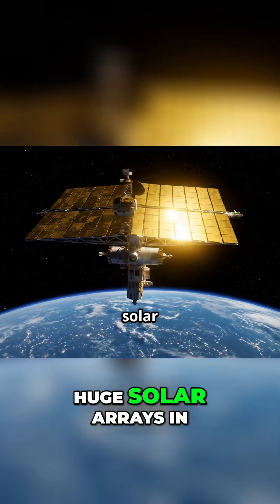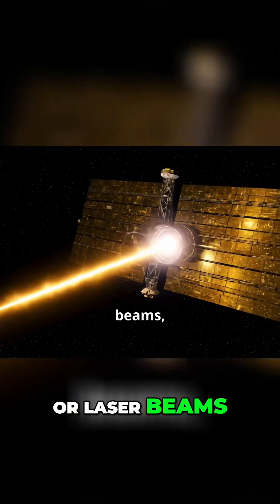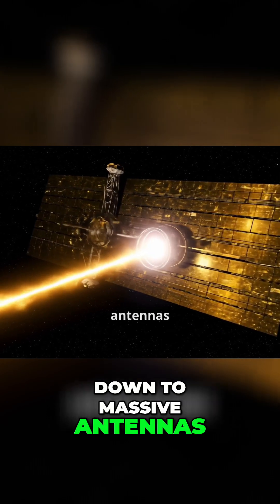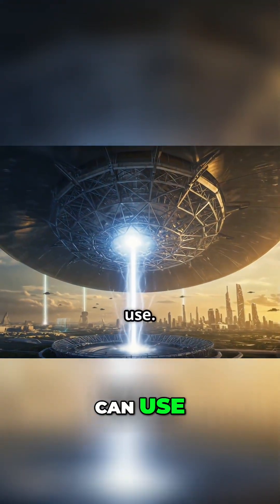Here's how it works. Huge solar arrays in orbit collect sunlight, convert it into microwave or laser beams, and send those beams down to massive antennas on Earth called rectennas. These receivers turn the beams into electricity we can use.